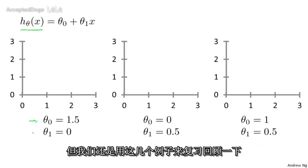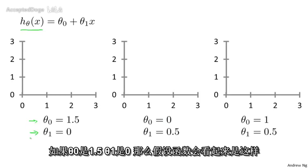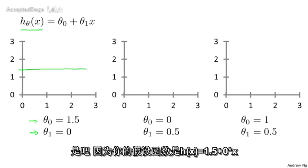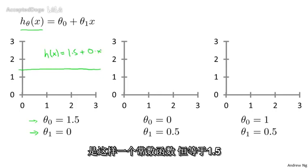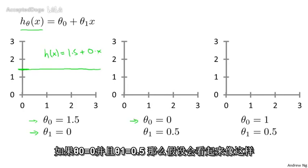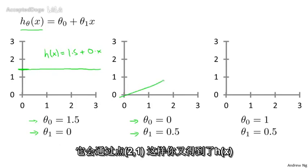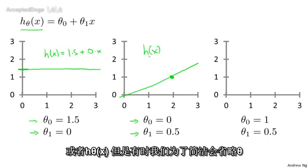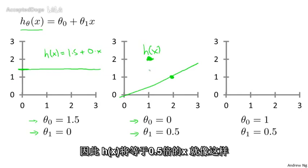If θ₀ is 1.5 and θ₁ is 0, then the hypothesis function will look like this. Because your hypothesis function would be h(x) equals 1.5 plus 0 times x, which is this constant value function that's just flat at 1.5. If θ₀ equals 0, θ₁ equals 0.5, then the hypothesis will look like this, and it should pass through this point (2,1).